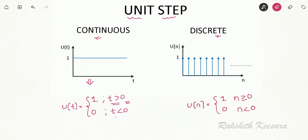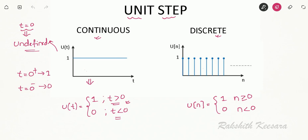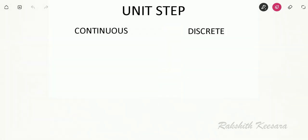In the continuous time unit step function, at t equal to 0 the signal is discontinuous. That is, at t equal to 0 plus the answer will be 1, at t equal to 0 minus the answer will be 0. So I can tell that for this function at t equal to 0 it is undefined. Next, since at t equal to 0 it is varying from 0 to 1 within zero duration, if I differentiate my unit step the answer will be the impulse function.